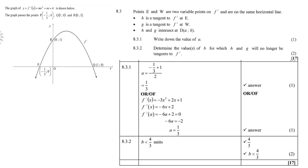8.3: Points E and W are two variable points on the derivative and are on the same horizontal line. H is the tangent to the derivative at E. G is the tangent to the derivative at W. And H and G intersect at D(a, b). You must write down the value of a. The best method and easy way to do it is to find the derivative first, which is minus three x squared plus two x plus one. Then you get your second derivative, which is minus six x plus two. Let it be equals to zero, and therefore you get a equals to one-third.